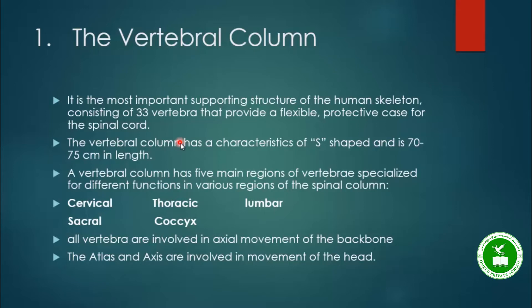The vertebral column has the characteristic of an S-shape and measures 70 to 75 centimeters. The vertebral column has five main regions of vertebrae, each specialized for different functions in various regions of the spinal column.